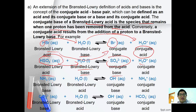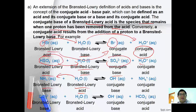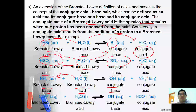Another example is ammonia and water. Unlike the previous cases, here it is water that donates the proton to ammonia. Because water is the proton donor, it acts as a Bronsted-Lowry acid, while ammonia is the proton acceptor and is therefore a Bronsted-Lowry base. Upon donating the proton, water forms hydroxide ions and is therefore the conjugate base. Upon accepting the proton, ammonia becomes ammonium ion and is therefore the conjugate acid.